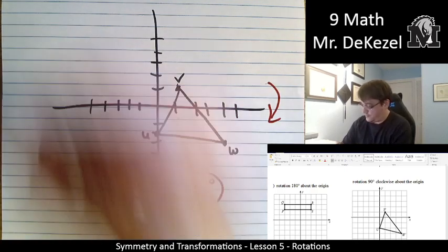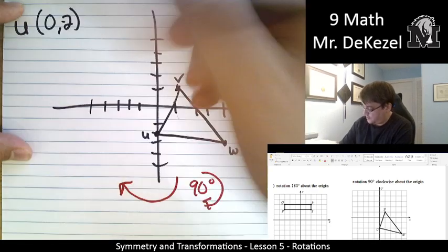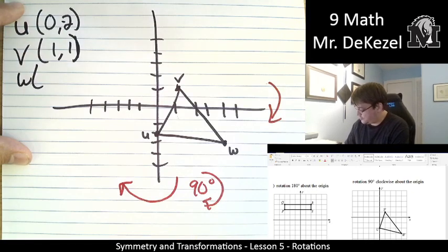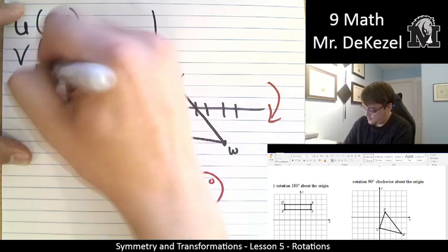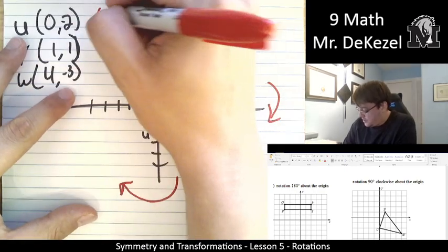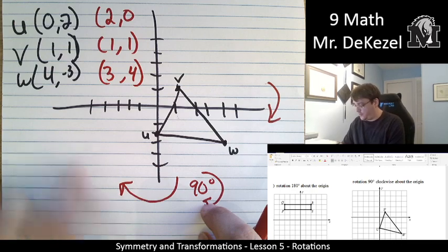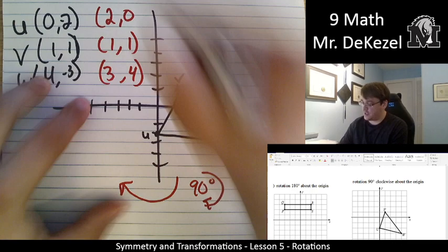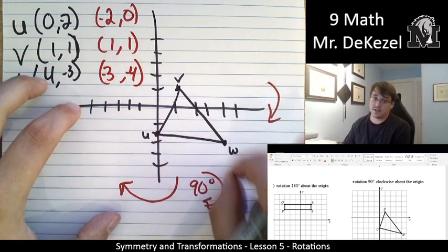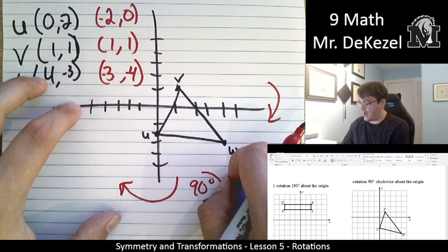So U is the point 0 minus 2. Then we have the point V, which is 1, 1. And the point W, which is 4 minus 3. We're rotating, so we're going to flip the numbers but not worry about the signs at all. So this is 2 and 0, 1 and 1, and 3 and 4. U and W are flipping into this quadrant here, which is all negative. So we're going to make all of these negative. And V is going to be rotating into this quadrant, which means we are making the X values positive and our Y values negative. So for V, we have a negative 1 there.